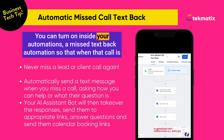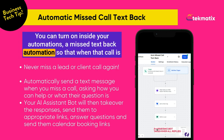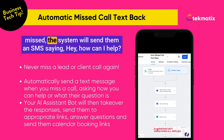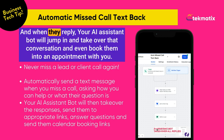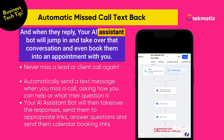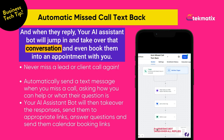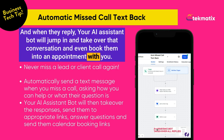You can turn on, inside your automations, a missed call text back automation. When that call is missed, the system will send them an SMS saying 'Hey, how can I help? Sorry I missed your call.' When they reply, your AI assistant bot will jump in and take over that conversation and even book them into an appointment with you.